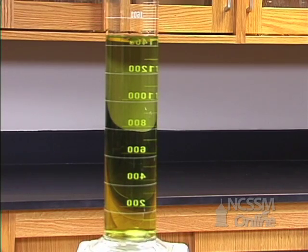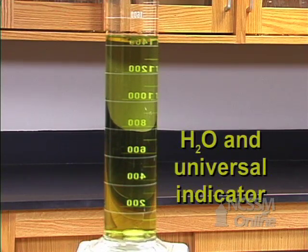Acid-base indicators are compounds that change color at different pHs. I've added some water to the graduated cylinder, then added some universal indicator, turning it green.